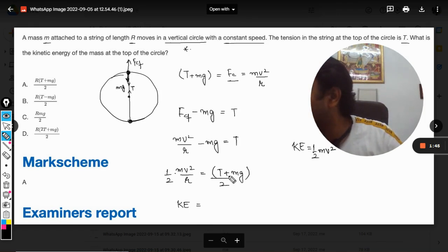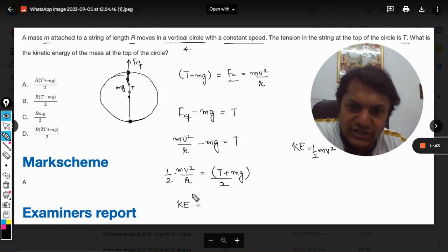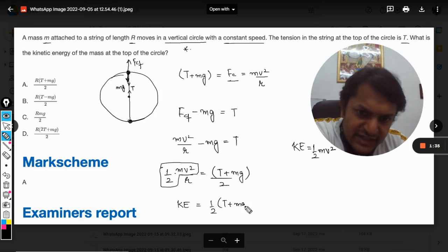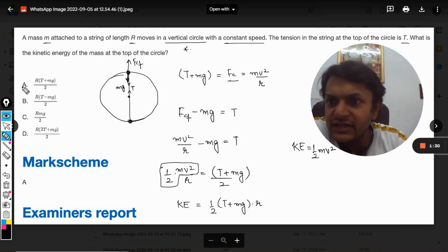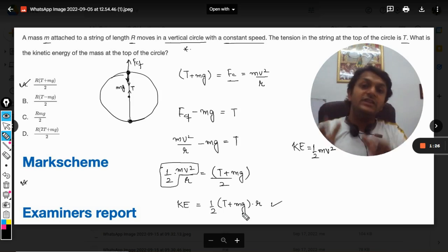is equal to - just a moment please - yeah, kinetic energy, that is half mv², is equal to half of (T plus mg) into R. And when we see, yes, A is the first option that meets with the answer that we have got.